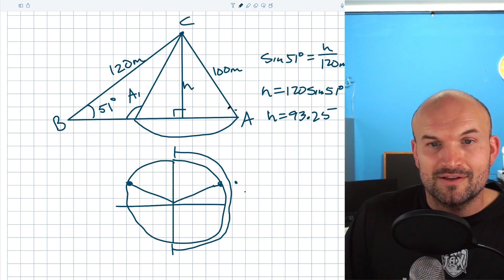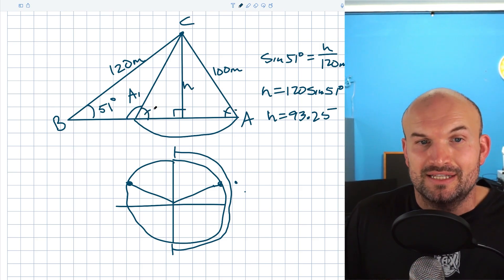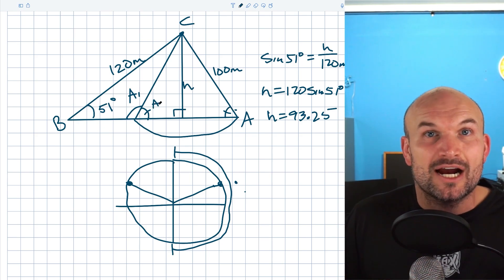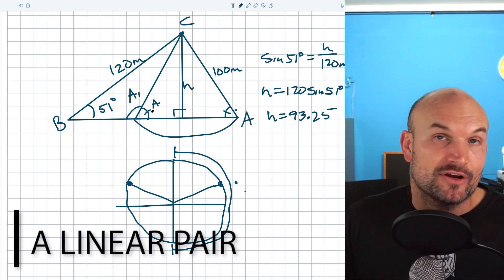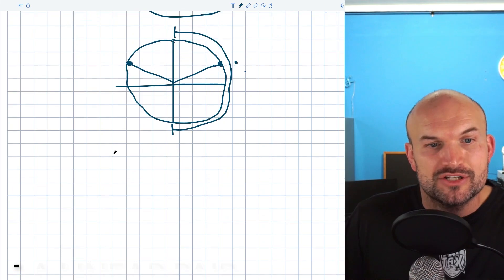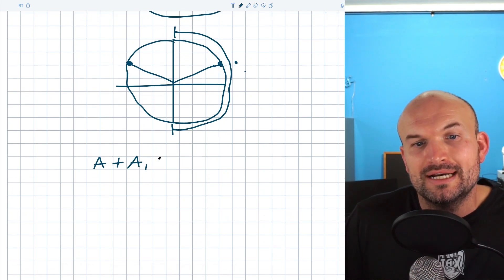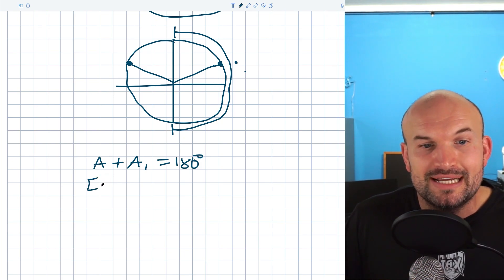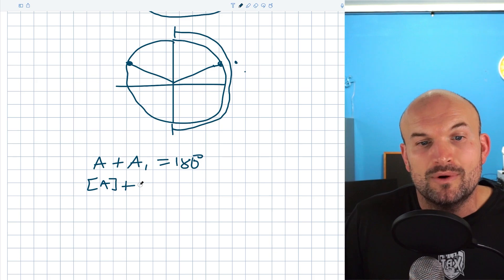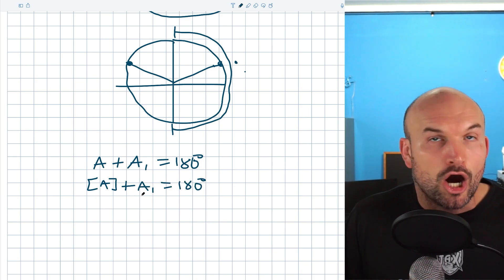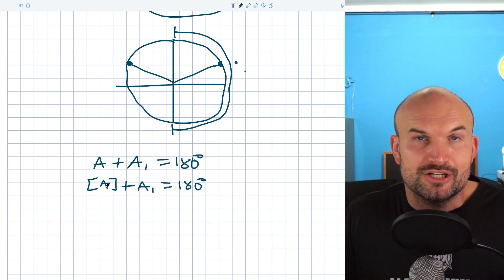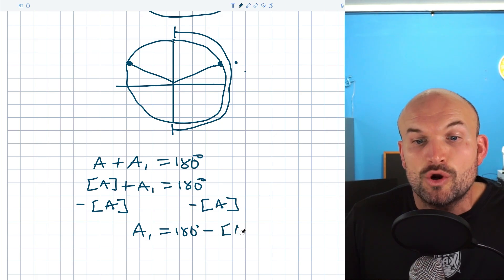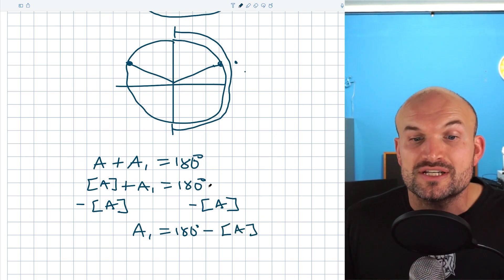So how do we find A1? These two angles are going to be exactly the same — if this is A, then that's also A. So A1 and A are a linear pair: they are adjacent, they make up a line, and they are supplementary. So A plus A1 equals 180 degrees. From Case 1, we stored our answer A, so we have everything we need to identify A1. To find A1, all you do is subtract the stored answer A from 180: A1 equals 180 degrees minus stored A.